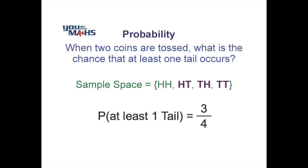So there are two ways to represent all the outcomes that can occur. It's strongly recommended that when you get any question where there are multiple steps — in other words two coins are tossed, two dice are rolled, or possibly a combination such as a coin and a dice — you draw a tree diagram or show a table so you can actually see all of the possible outcomes.